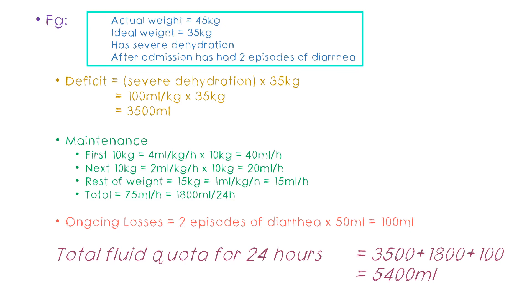Usually we give the deficit and maintenance through a cannula, and ask the patient to take the ongoing losses orally with each episode, if the child is able to drink. If not, you can add it to the fluid given through the cannula.